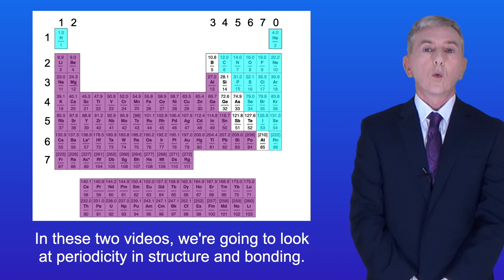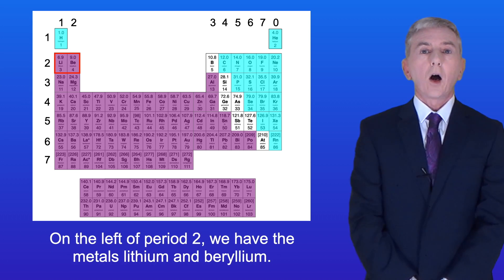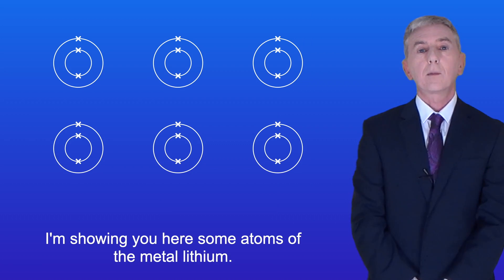In these two videos we're going to look at periodicity in structure and bonding and we're going to look at period 2. On the left of period 2 we have the metals lithium and beryllium. I'm showing you here some atoms of the metal lithium.